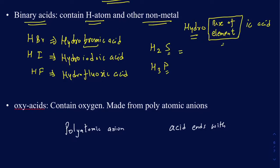What about H2S? There are actually two different names for this. You can call it hydrogen sulfide, but if it's in solution form as an acid, then it still starts with 'hydro,' and then sulfur gives us 'sulfur,' and you replace the ending with 'ic acid' — so it's hydrosulfuric acid. Make sure you don't confuse hydrosulfuric acid with sulfuric acid.